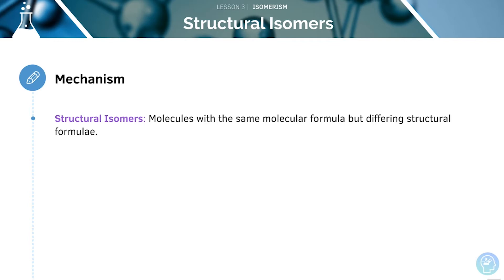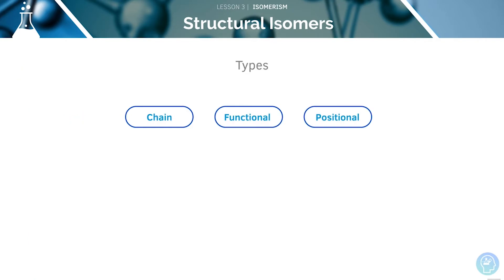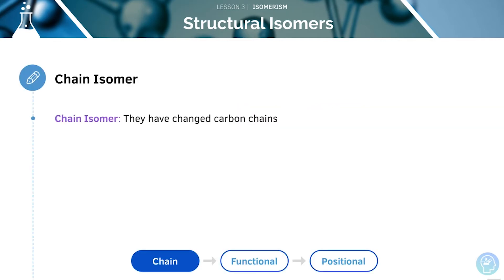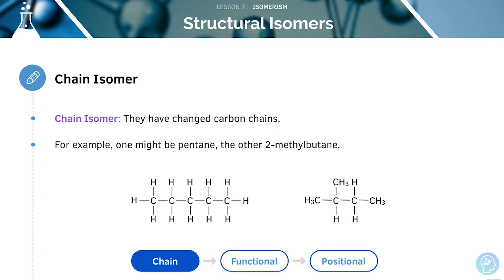Let's start off by looking at structural isomers. These are molecules with the same molecular formulae but differing structural formulae. There are three main types you need to know: chain, functional, and positional. Chain isomers will have changed carbon chains. For example, one might be pentane but the other might be 2-methylbutane.